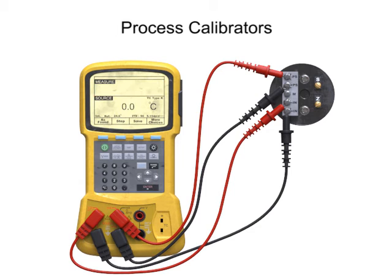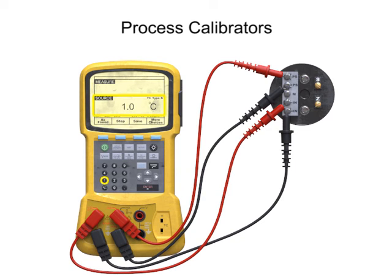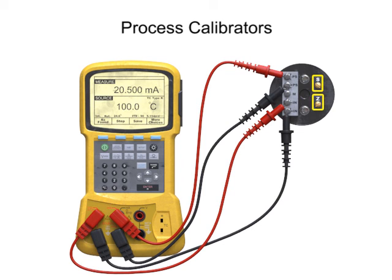With a transmitter range of 4 to 20 milliamps, the expected output at the low end of the temperature range of 0 degrees Celsius is 4 milliamps. At the high end of the temperature range of 100 degrees Celsius, the expected output of the transmitter is 20 milliamps. Calibration is performed by using the zero and span adjustments to tune the appropriate current value for the simulated temperature.